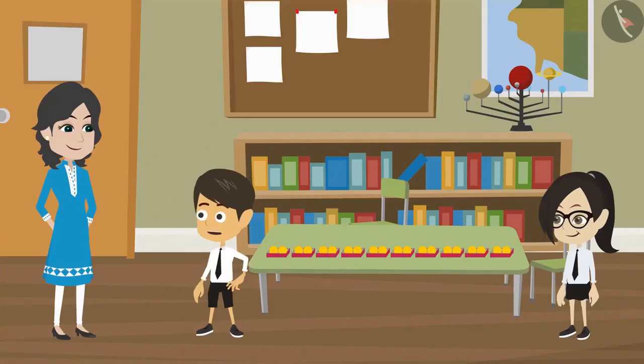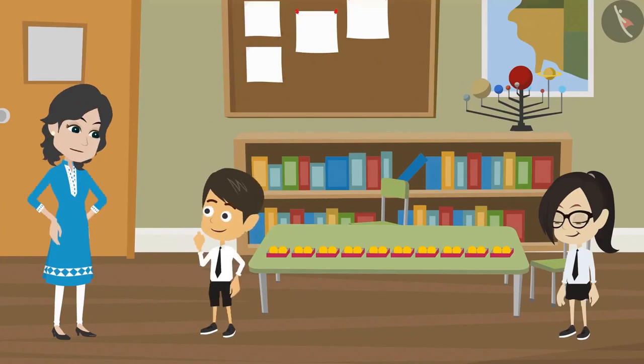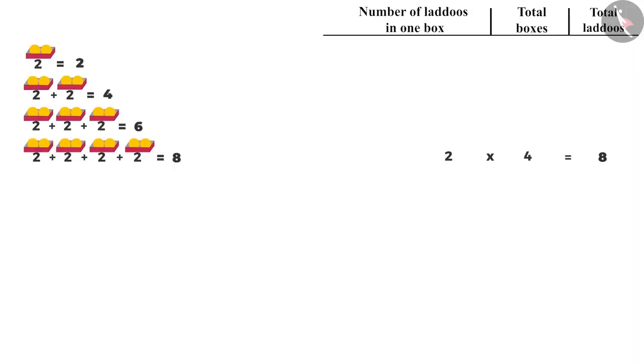That means if you multiply two by ten, will the answer be the same if you add two ten times? Yes, Riyanj. In the same way, you can convert the above additions into multiplication. If you want to find the ladoos in three boxes, multiply two by three. Similarly, for two boxes, multiply two by two. And to find the ladoos in one box, multiply two by one.